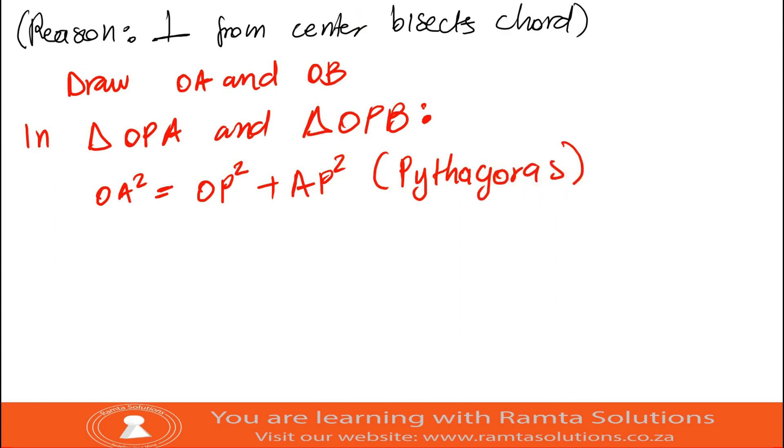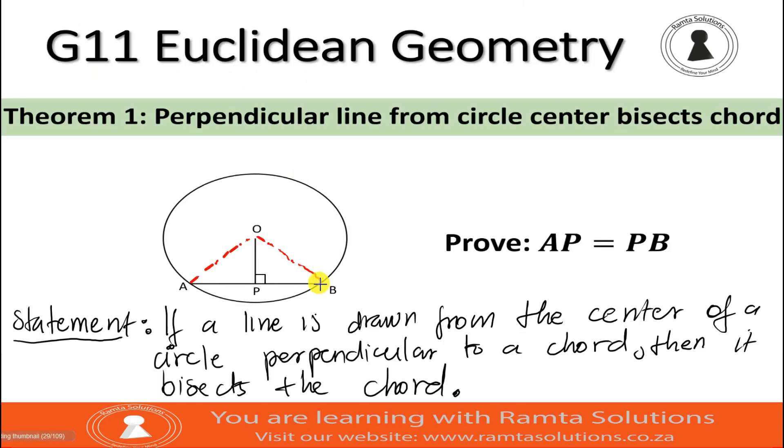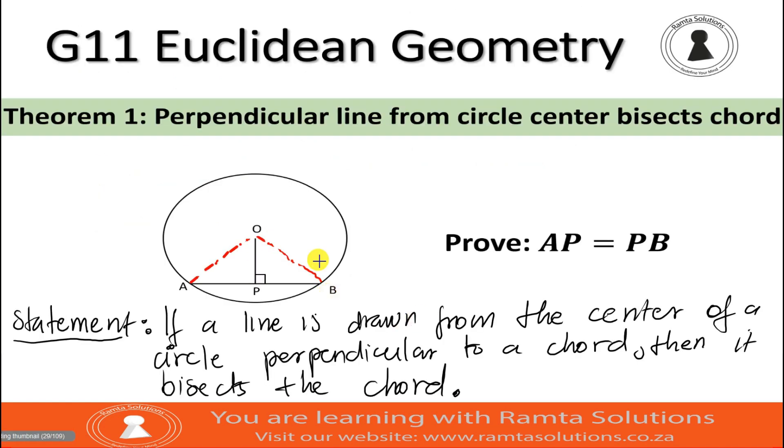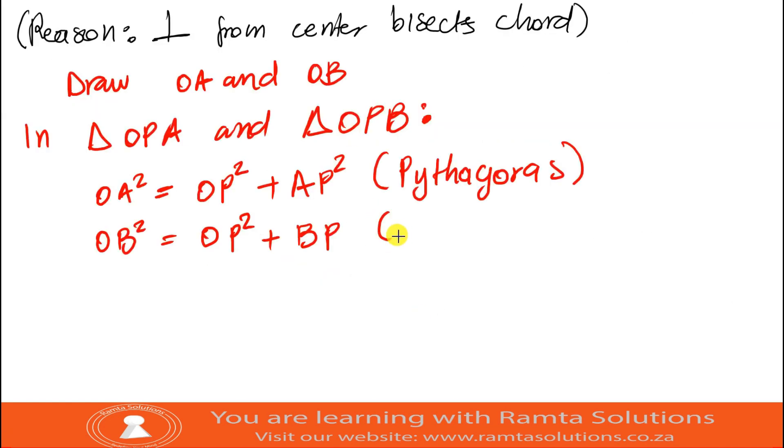Then again, I'm going to look at triangle OPB. I can say the same thing. OB is the hypotenuse. So I will say OB squared equals OP squared plus BP squared. And what's the reason? It's Pythagoras theorem.